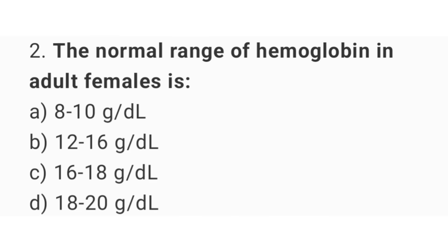Question number 2. The normal range of hemoglobin in adult females is? The right answer is option B: 12 up to 16 grams per deciliter.